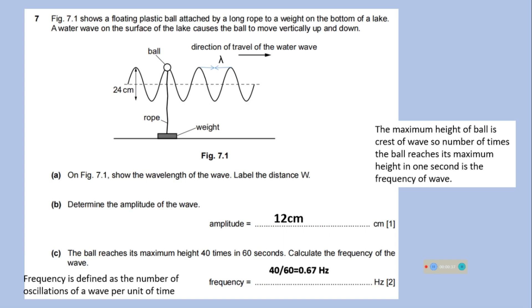In this question, the figure shows a floating plastic ball attached by a long rope to a weight on the bottom of a lake. A water wave on the surface of the lake causes the ball to move vertically up and down. A rope is attached, this is a ball and this is the maximum height the ball can reach.